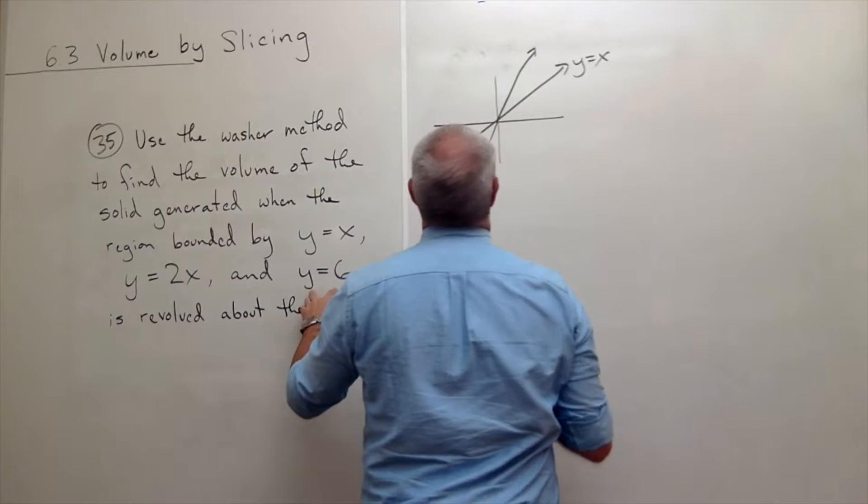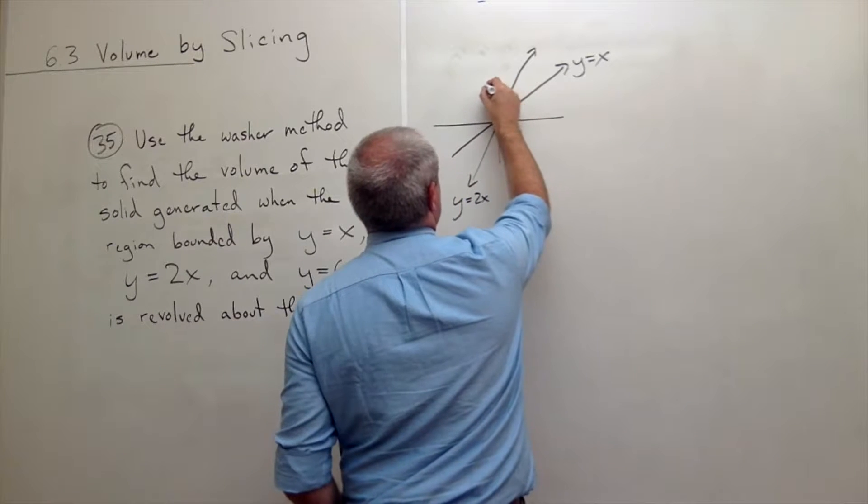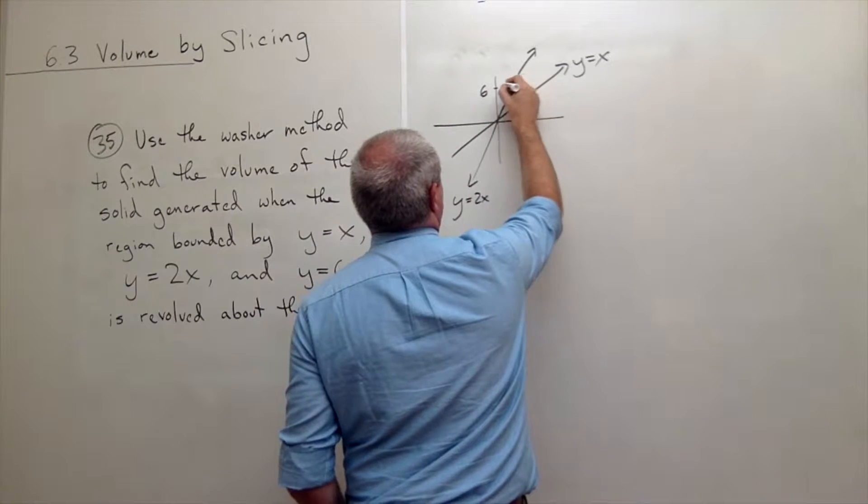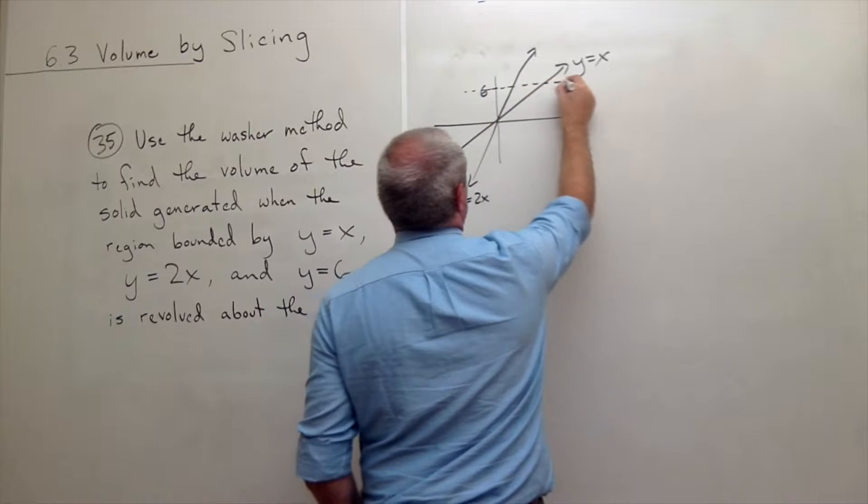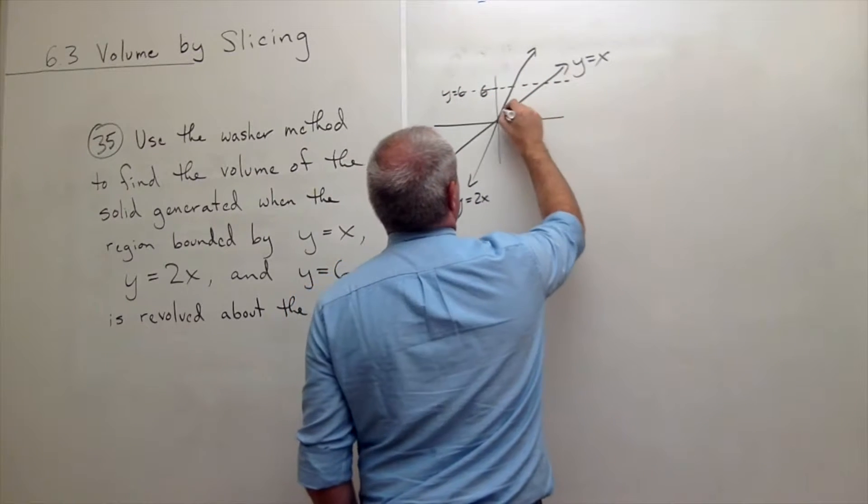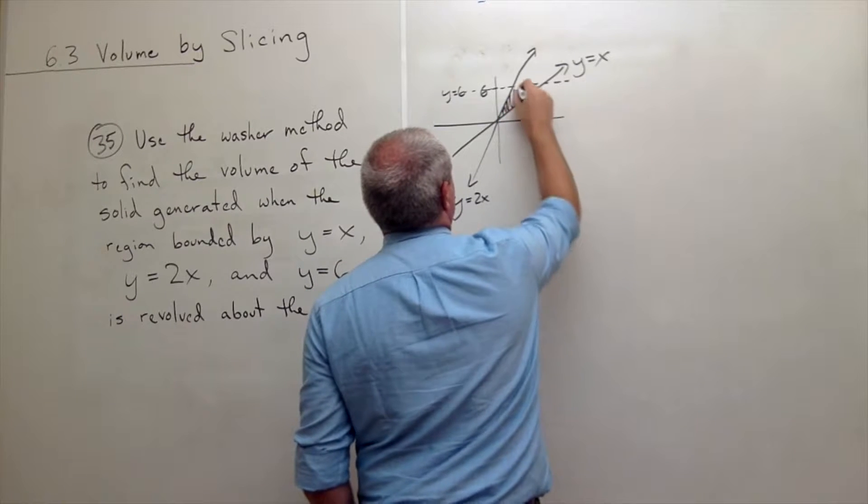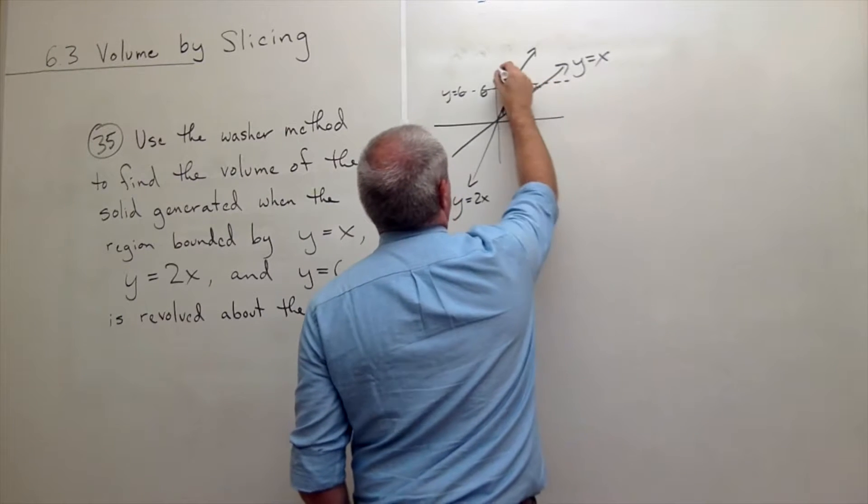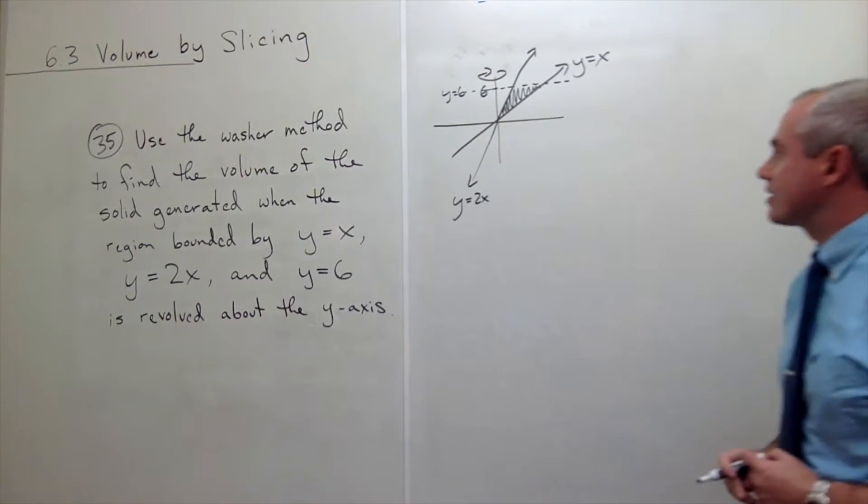So this is y equals 2x. And then we've got y equals 6. So let's just put 6 right here. And so here's y equals 6. And so this region right here is revolved around the y-axis.